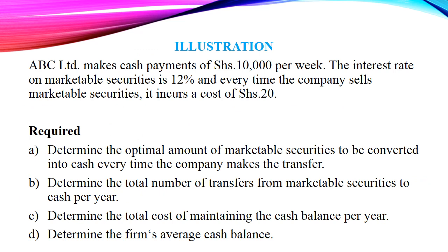We will now look at an illustration to understand the Baumol model better. ABC Limited makes cash payments of shillings 10,000 per week. The interest rate on marketable securities is 12%, and every time the company sells marketable securities it incurs a cost of shillings 20. You are required to: A) determine the optimal amount of marketable securities to be converted into cash per transfer; B) determine the total number of transfers per year; C) determine the total cost of maintaining the cash balance per year; and D) determine the firm's average cash balance.